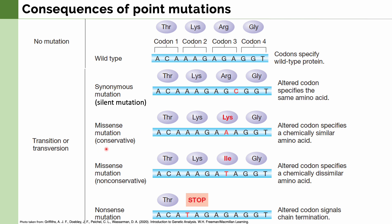Then we have two types of missense mutations. Missense means the resulting protein does not make sense to the cell. We classify this as either conservative or non-conservative. Conservative means the altered codon specifies a chemically similar amino acid, so the function of the protein might not be altered as much. A non-conservative missense mutation means the altered codon specifies a chemically dissimilar amino acid, and it is usually in these mutations that protein function is highly altered. Lastly, we have a nonsense mutation, in which the altered codon signals for chain termination, meaning the rest of the mRNA can no longer be understood by the cell.